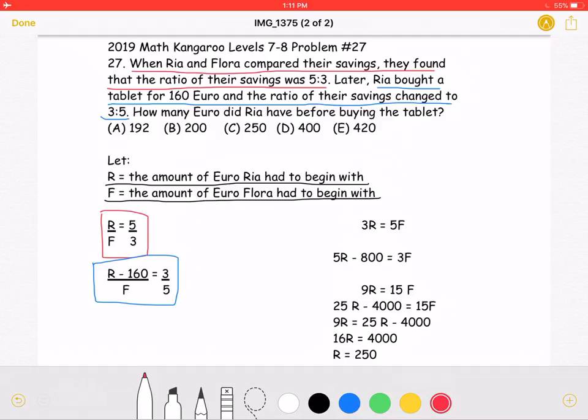Now, we can cross-multiply. By cross-multiplying this equation, R over F equals 5 over 3, we will get that 3R is equal to 5F. We can also cross-multiply in this equation to get 5R minus 800 is equal to 3F.